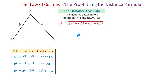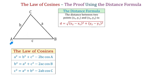Here is the distance formula, and it tells us that if we have two points with the coordinates x sub 1, y sub 1 and x sub 2, y sub 2, then we can find the distance between these two points using the formula: square root of (x sub 2 minus x sub 1) squared plus (y sub 2 minus y sub 1) squared.